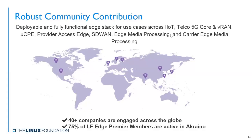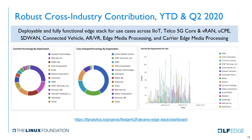The Akraino community has participated in several industry outreach events like ONS and Open Computing World. You can see the global continental map. The use cases across IoT, provider access edge, SD-WAN, edge media processing, and carrier edge media processing. There are 75% of edge premium members active in Akraino, and more than 40 companies engaged across the globe. These are some of the active contributions — you can see who is contributing, lines of code, and commits.